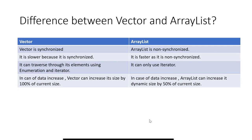What is the difference between Vector and ArrayList? Vector is synchronized while ArrayList is non-synchronized. Vector is slow because it is synchronized; ArrayList is fast because it is non-synchronized. Synchronized means only one thread can change data at a time in Vector, while in ArrayList multiple threads can work on a single object. Vector can traverse elements using both Enumeration and Iterator, while ArrayList can only use Iterator. Vector can increase its size by 100% if required, while ArrayList can increase its size by 50%.